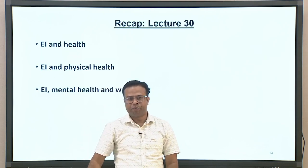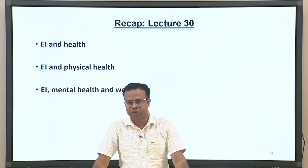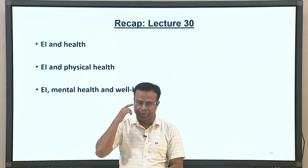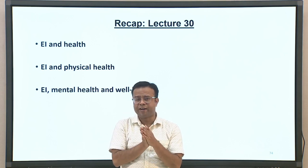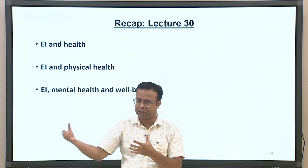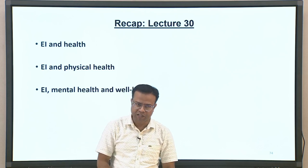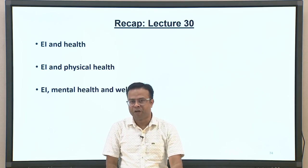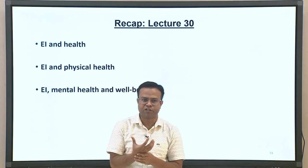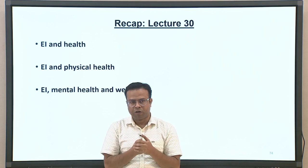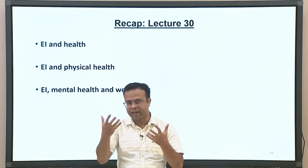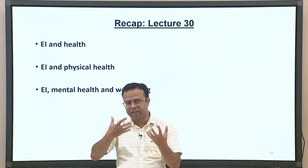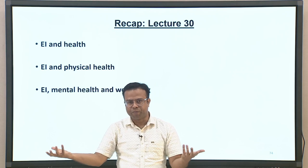Before discussing today's lecture, let me give a brief recap of what we discussed in the last lecture. We specifically discussed the role of emotional intelligence in the context of health and well-being — both physical health and mental health. In the context of mental health, we discussed two aspects: mental disorders and various indicators of well-being. A lot of research indicates that emotional intelligence is a core aspect of mental health, because many psychological disorders are largely emotion-based, involving problems with emotions and emotion regulation.